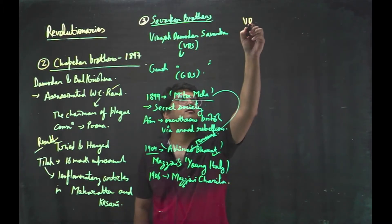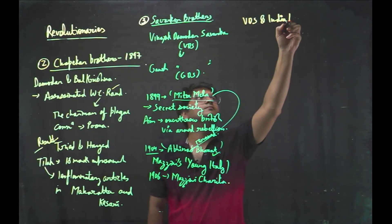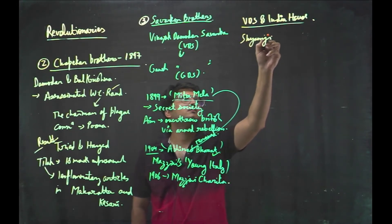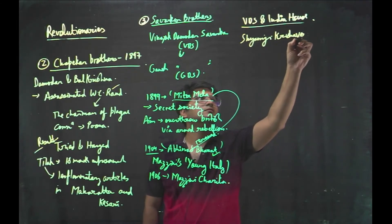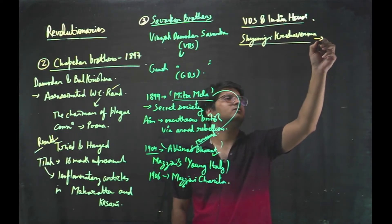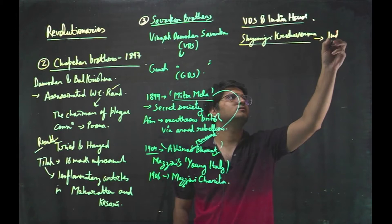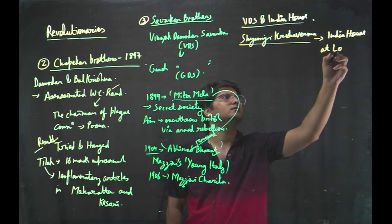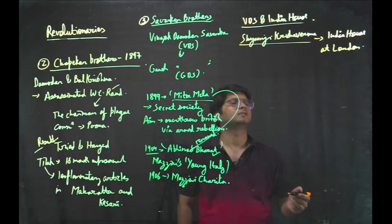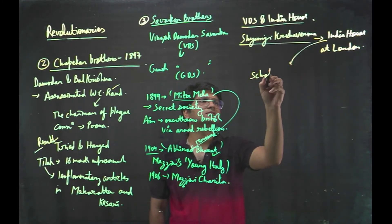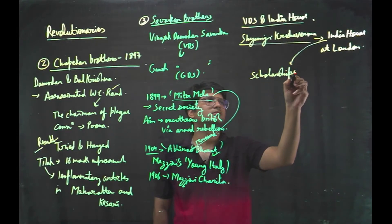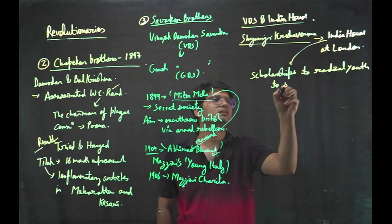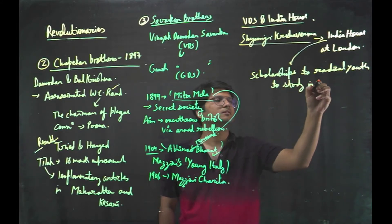Veer Savarkar and India House. Shamji Krishna Varma started India House, established India House at London. This India House provided scholarships to radical youth to study in London, England.